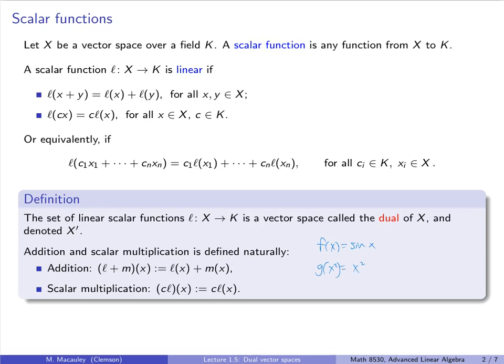Now, we can define 2f plus 3g in the obvious way. This is just a function of x, and it is 2 sine of x plus 3x squared. So I'll let you check these details if you want, but there should be no surprises.